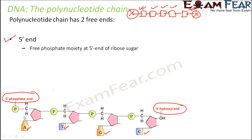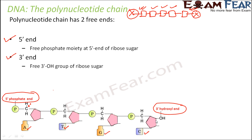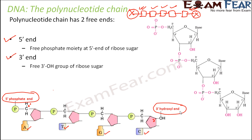One free end is the five prime end — it is called this because there is a free phosphate moiety at the five prime carbon of the ribose sugar. The other end is called the three prime end, because a hydroxyl group is attached to the three prime carbon. Whether you talk about a strand of DNA or RNA, it will always have one free five prime end and the other end will be the three prime end.